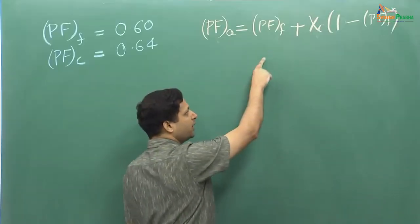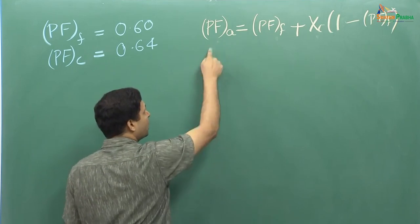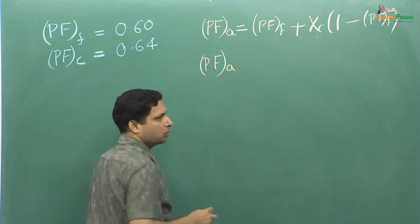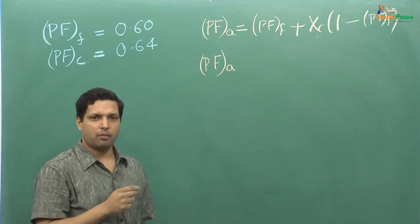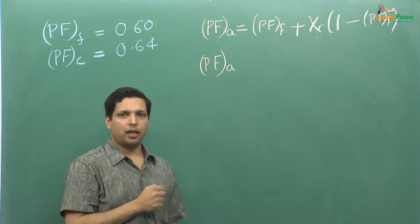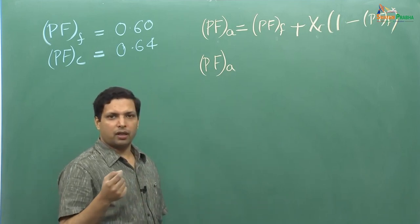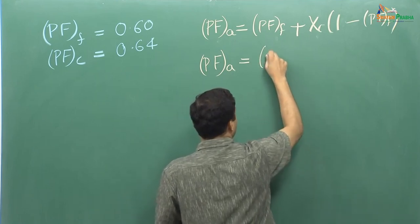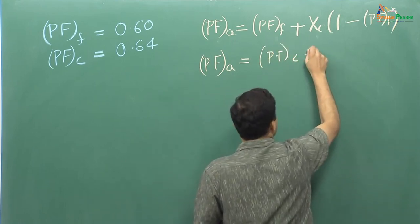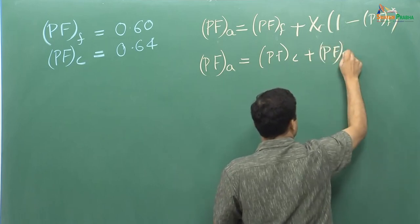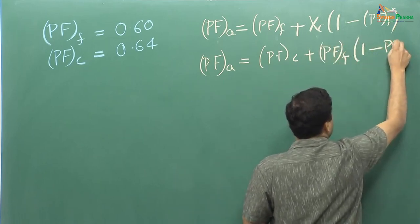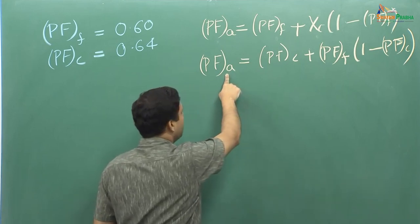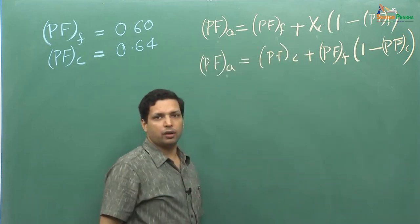That end-point condition can also be expressed as follows: packing fraction apparent can be given by the case where coarse particles are completely packed under dense random packing, and in the pockets wherever available it is only the fine particles. We put this value into the equation and we will be in a position to calculate Xc.